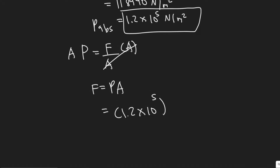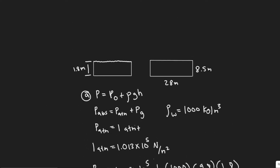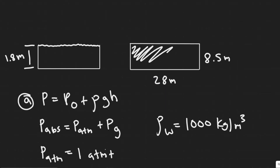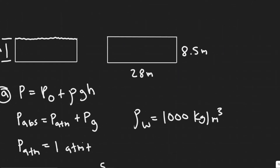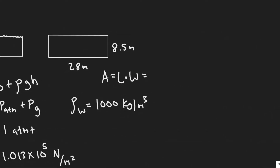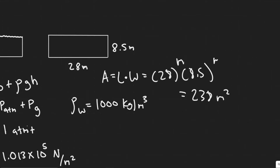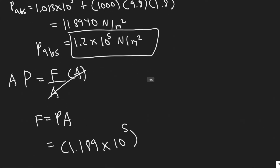Now, what is the area of the bottom of the swimming pool? Looking at the pool from the top, the bottom is a rectangle, so we just do length times width. The length is 28 meters and the width is 8.5 meters. So 28 times 8.5 equals 238 meters squared — that's the area of the bottom.